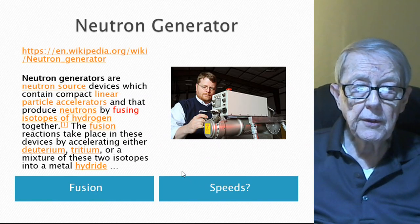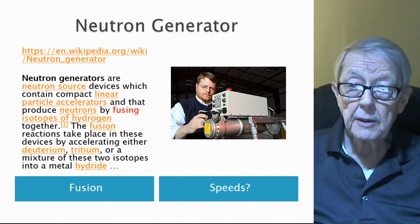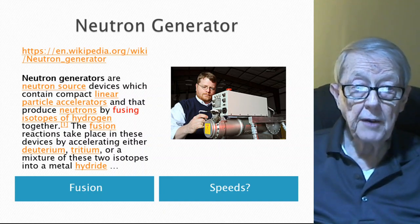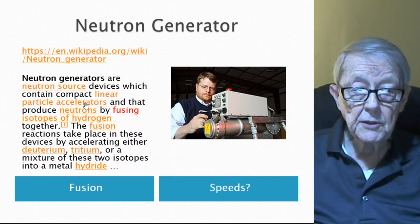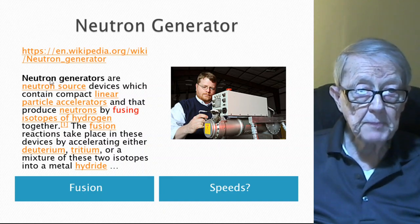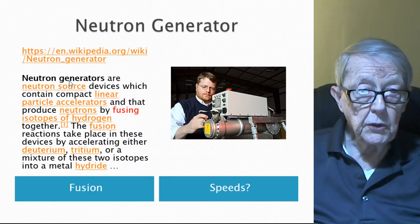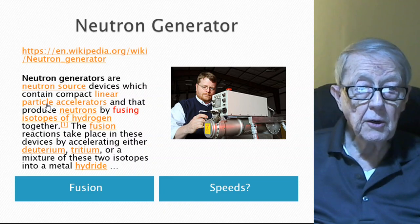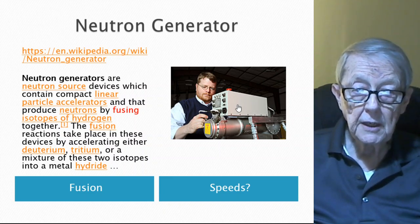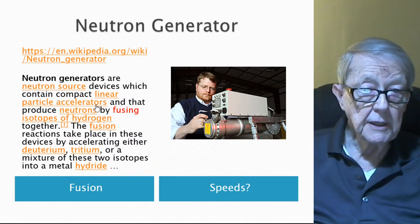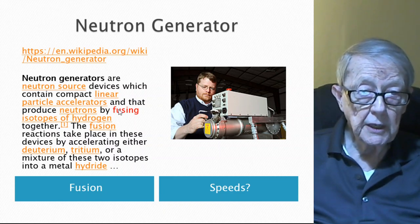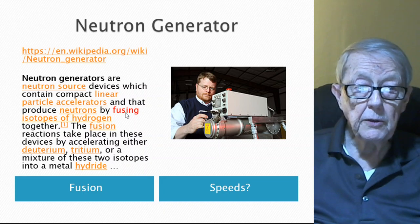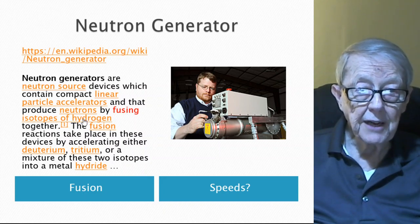They don't accelerate neutrons in a particle accelerator, but they have their own device. Just as a point of interest, again, Wikipedia: neutron generators are neutron source devices which contain compact linear particle accelerators. Apparently inside here is, I haven't looked into it much, that produces neutrons by fusing isotopes of hydrogen together.